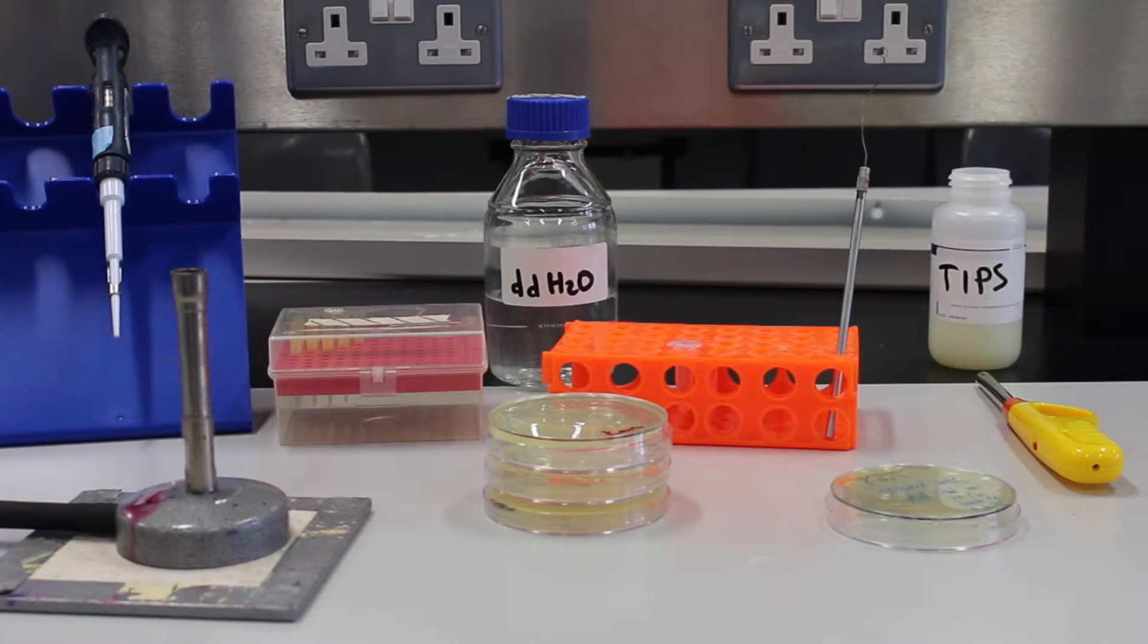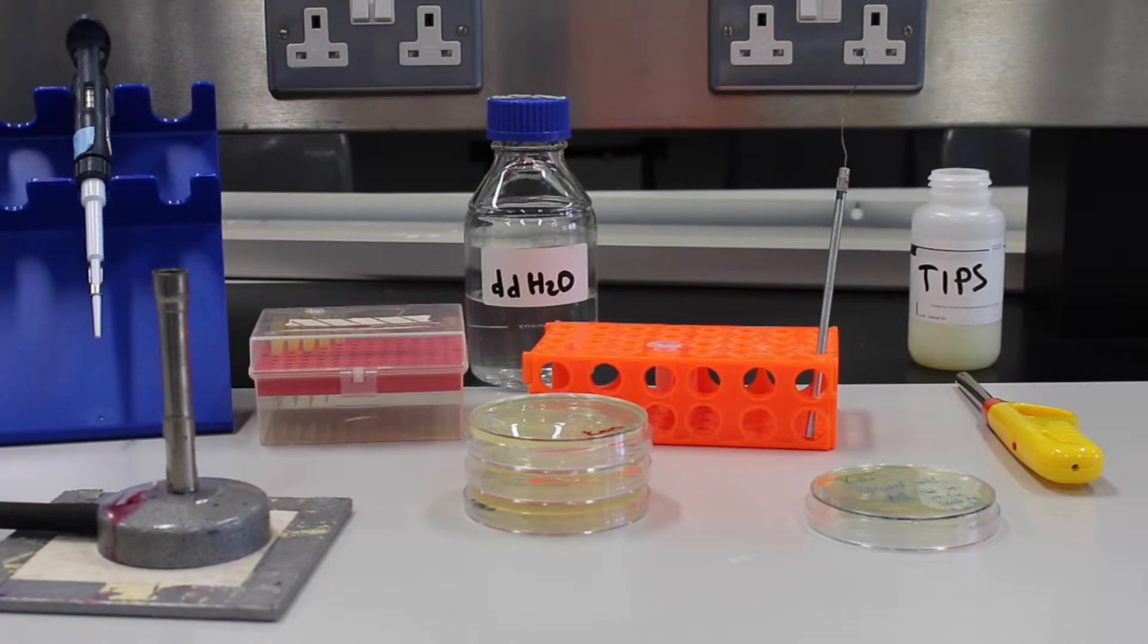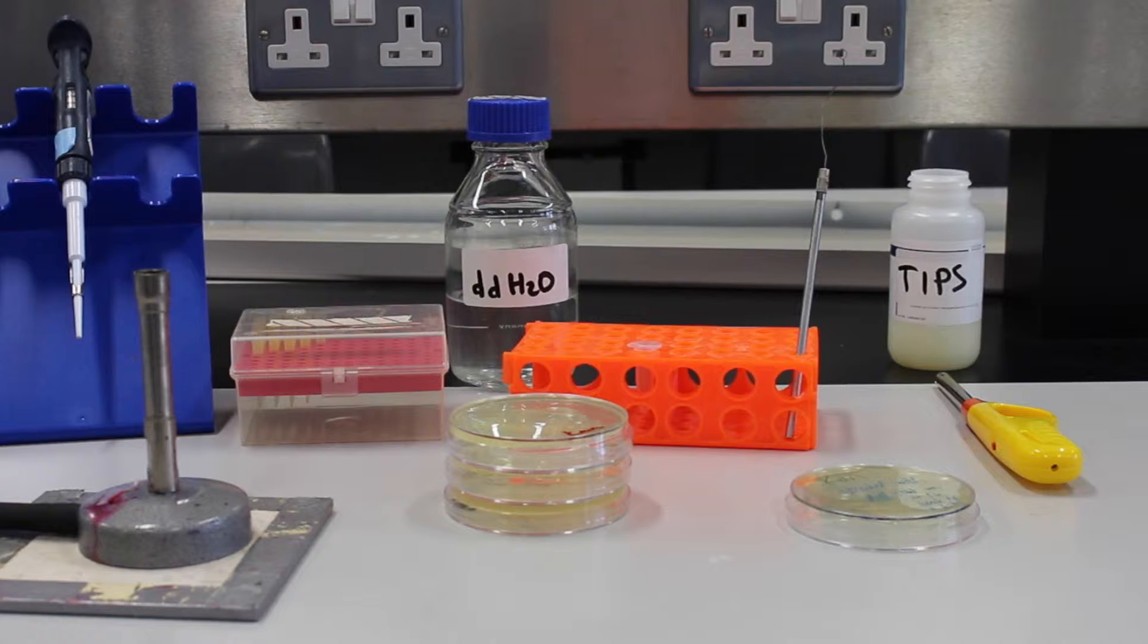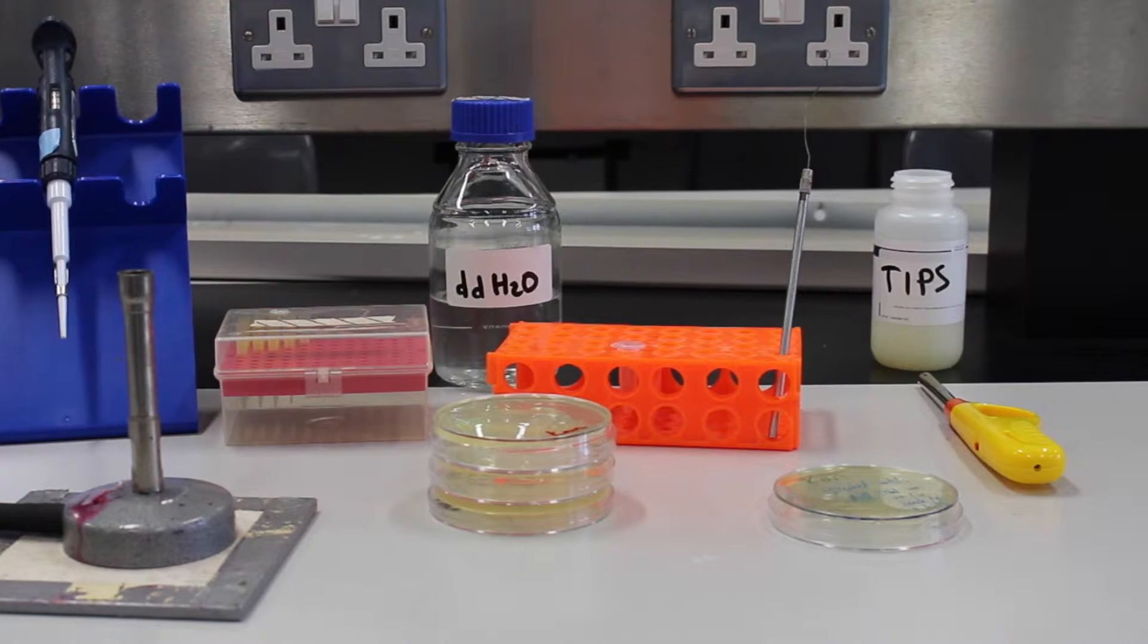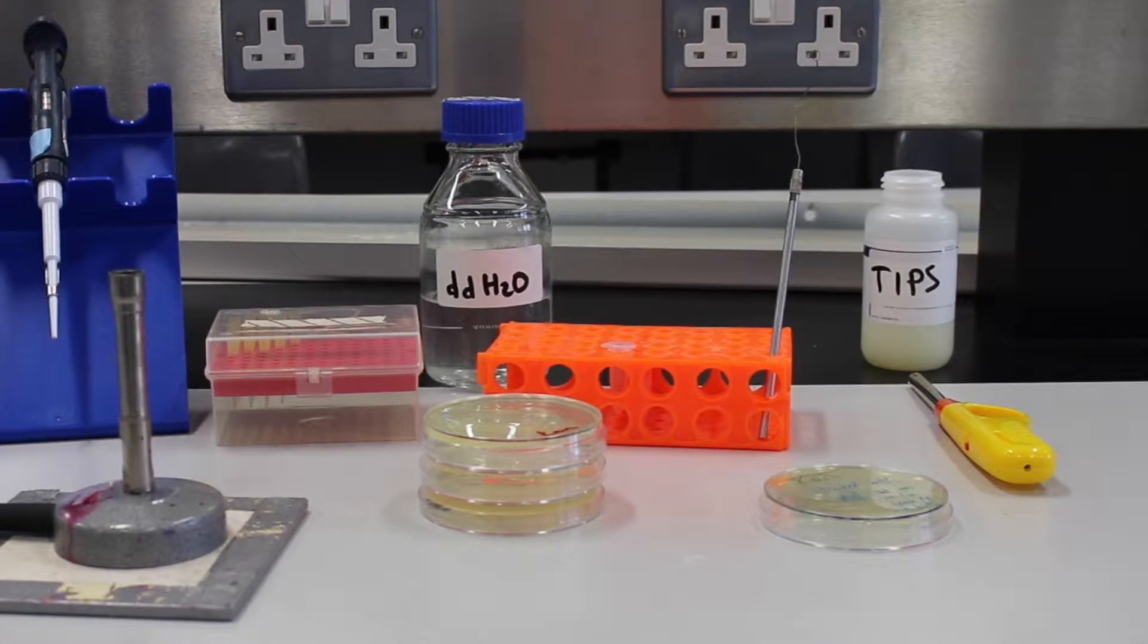Bacterial re-streaking is used to isolate a single colony. The following method eliminates so many cells that you can re-streak up to four different colonies on the same plate.